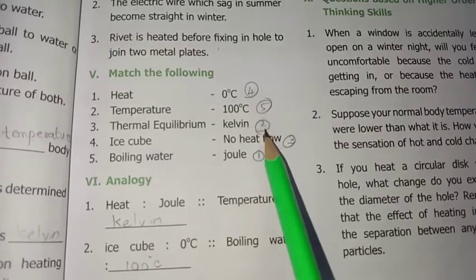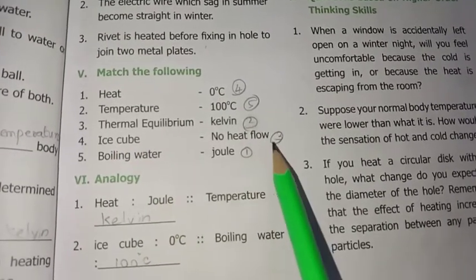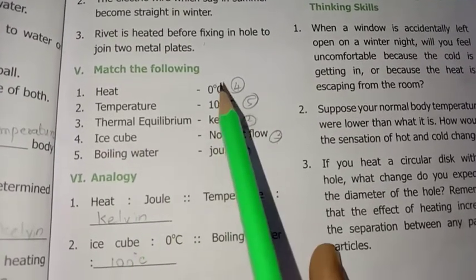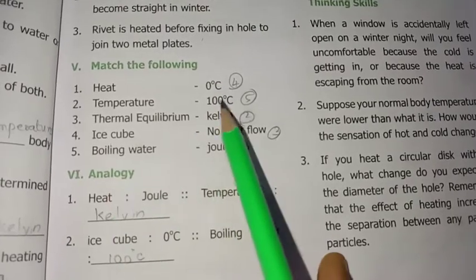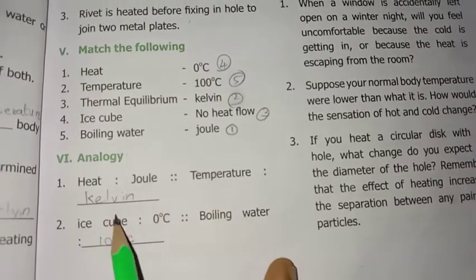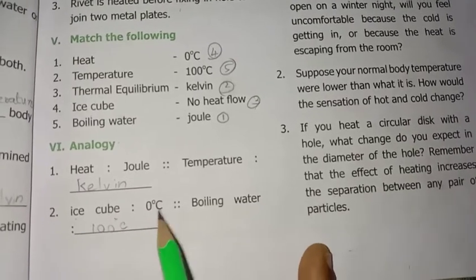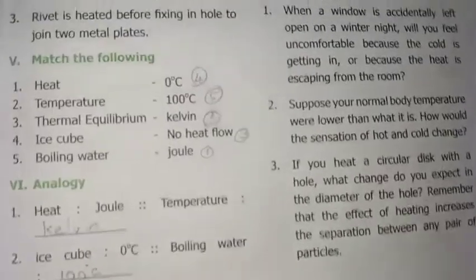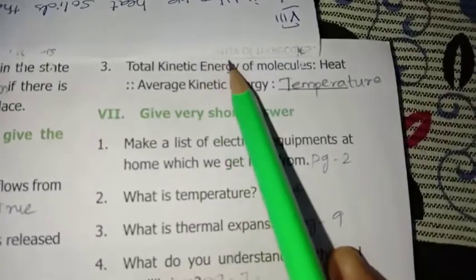Temperature - Kelvin, thermal equilibrium - no heat flow, ice cube - 0°C, boiling water - 100°C. Next analogy: heat - Joule, temperature - Kelvin. Total kinetic energy of molecules - heat, average kinetic energy - temperature. Next video will cover short answers in detail.